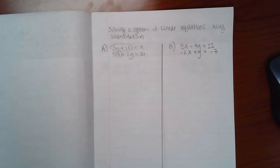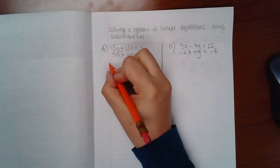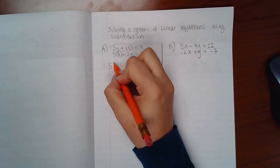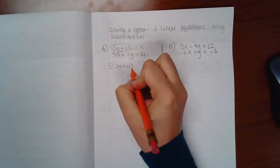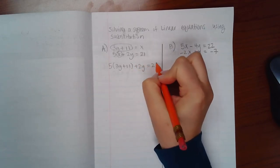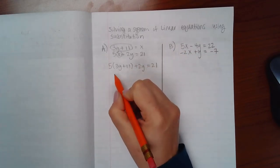instead of writing x, we will use its equivalent expression, which means the bottom equation will become 5 times 3y plus 11 plus 2y equal to 21. And if I distribute,